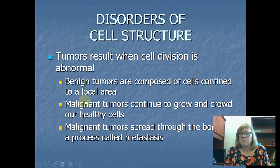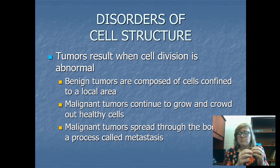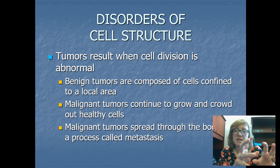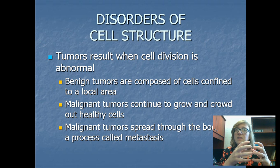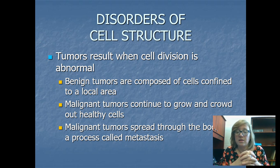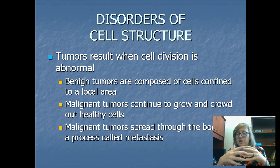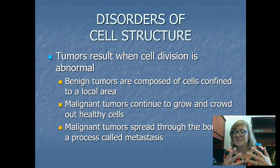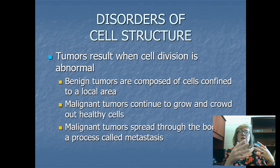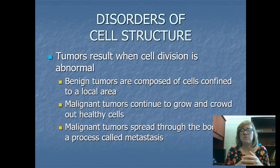A benign tumor is composed of cells confined to a small area. A malignant tumor is one that continues to grow, crowds out healthy cells, and diverts blood vessels to itself to receive nutrients while your healthy cells get nothing. If a malignant tumor spreads through your body, that's called metastasis. You may have heard the phrase 'cancer metastasized' — that's an important term if you're going into nursing or healthcare.